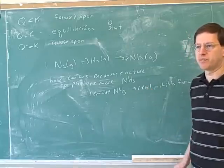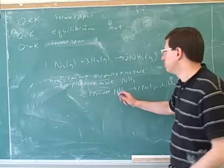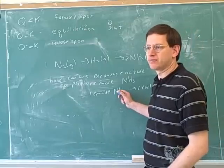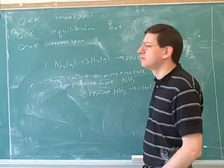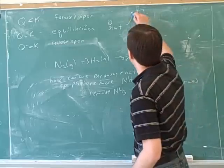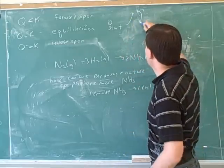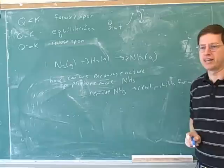So you're using Chatelier's principle there. What you did here is when you remove ammonia, you have less product. So what does that do to Q? Makes it smaller. So that would move us up here, and then nature tries to move us forward to get back to equilibrium.